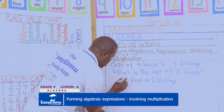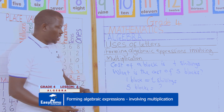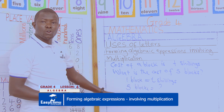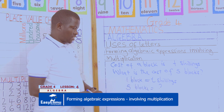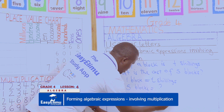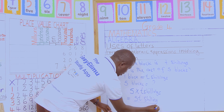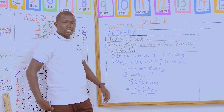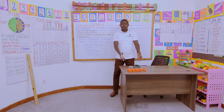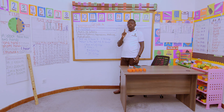So five blocks — if one block is T shillings, five blocks will cost how much? It will be five multiplied by T shillings. We take five blocks and multiply by T shillings, and our answer will be five T shillings. That is the amount of money which John has spent to buy these blocks — five T shillings, from five blocks multiplied by T shillings, because the price of one block is T shillings.